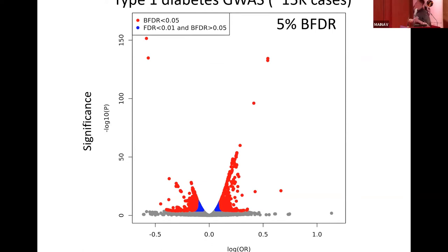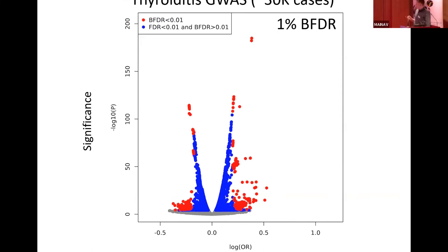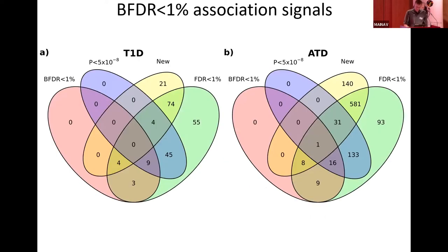Because the BFDR is inherently stricter than the FDR, it makes sense to also take a more relaxed threshold of 5% to find additional findings, with the proviso that these are more tentative. At 5%, many more things come up as significant. In the autoimmune thyroid disease GWAS — with about twice as many cases — a lot of the noise in rare variants disappears, and the most extreme outliers satisfy the 1% BFDR.